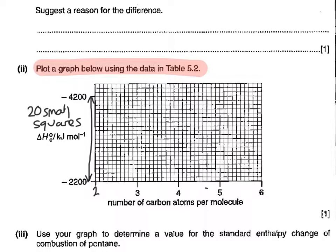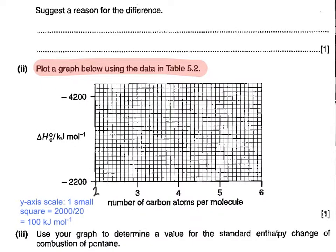To decide on my scaling for my y-axis, I've got to count how many small squares sit between minus 2200 and minus 4200. The y-axis scale ends up being one small square equals 100 kilojoules per mole. The reason being is that there's 20 small squares, and the value on the scale is 2000 between the top end and the bottom end.